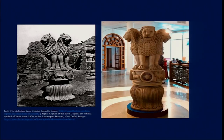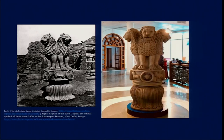Found through archaeological excavations in the 19th century, the capital was discovered detached from the shaft it would originally have been part of. Most significantly, what we find in this particular capital are four lions — instead of the single animal seen in other capitals like those near Vaishali or at Lorya Nandangar.